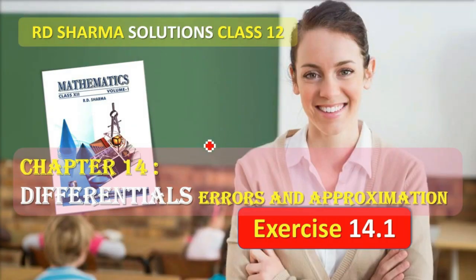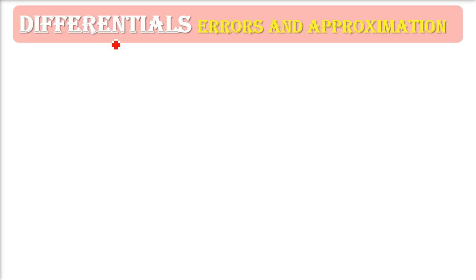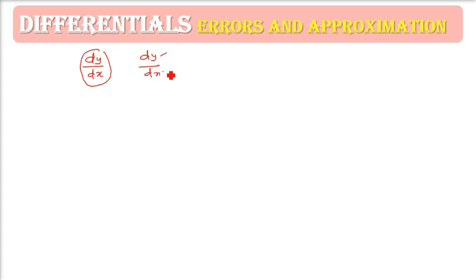This is R.D. Sharma Solution Class 12 Chapter 14 Differentials, Errors and Approximation Exercise 14.1. In order to use differentials for errors and approximation, there are certain things we need to understand. The first thing is dy/dx, which we have been talking about as differentiation — this is just a symbol. It is not that we are dividing dy by dx. These are two separate entities: dy/dx is just a symbolic way to represent.